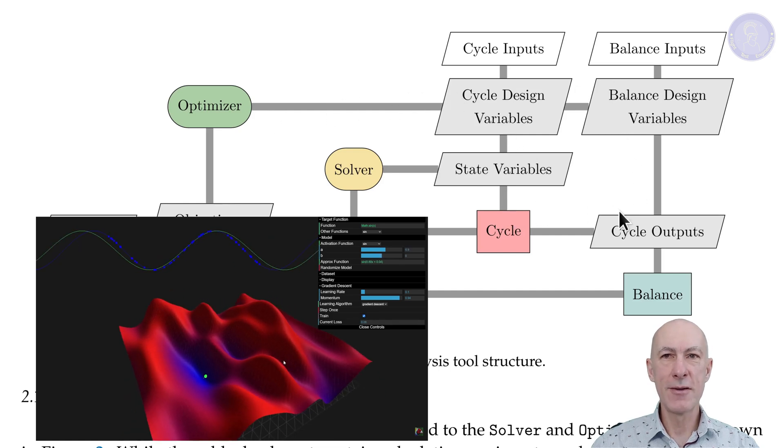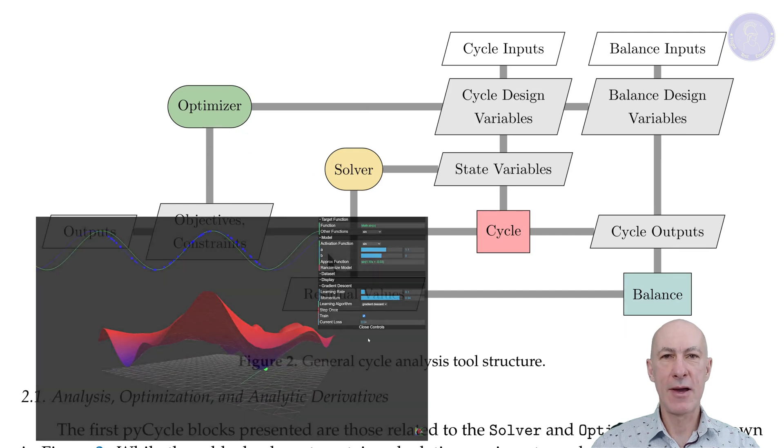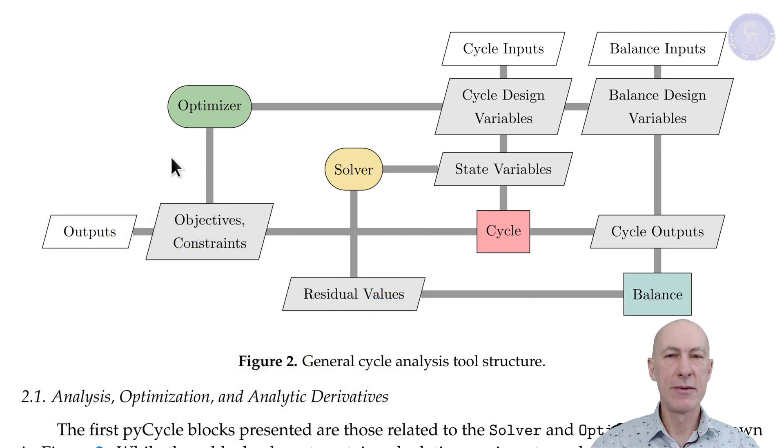So, in short, here's how it works. The optimizer proposes a set of design variables. Then the design variables are sent to the cycle block. The cycle block calculates engine performance based on the design variables.